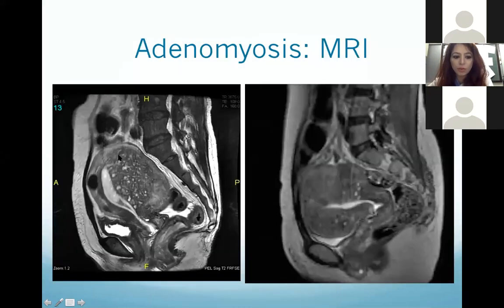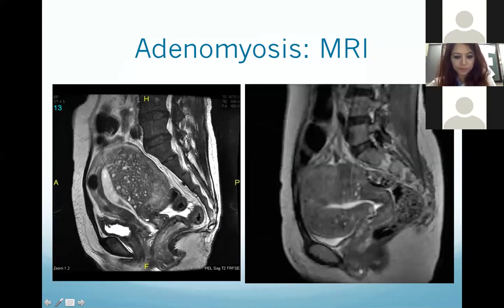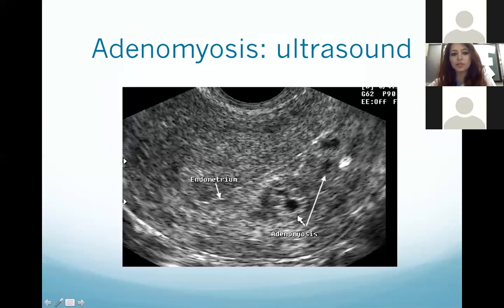This is a case of adenomyosis. You can see a bulky posterior wall of the uterus with little cystic spaces. A fibroid is also noted in the anterior wall. This ultrasound image shows adenomyosis with multiple cystic areas in the posterior myometrium; this is the endometrium.